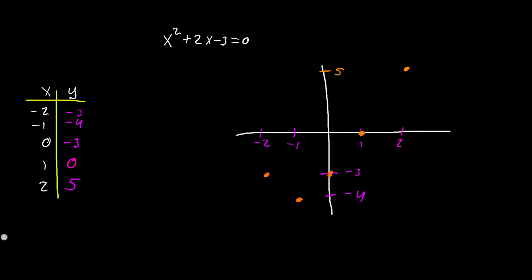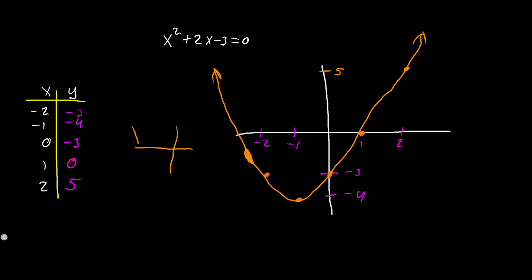We can go ahead and get a good rough sketch given our points now. We have y = 5 up there for x = 2. We're going to start from the top and connect our points going downward. The parabola should look something like this as a rough sketch, but since we know that x = -1 is the vertex we can have a good looking graph. That's how its original shape should look.